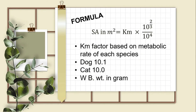CTA stands for clinical trial application. The formula: SA in M² equals KM times 10 to the power of 2/3 over 10 to the power of 4. KM is the factor based on metabolic rate of each species — the dog has a KM of 10.1 and the cat has a KM of 10.0. WB refers to weight in grams. M² represents the dose calculated based on body surface area, and KM stands for the metabolic rate of the species.